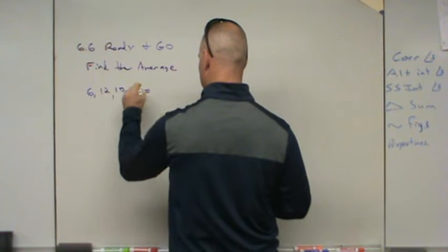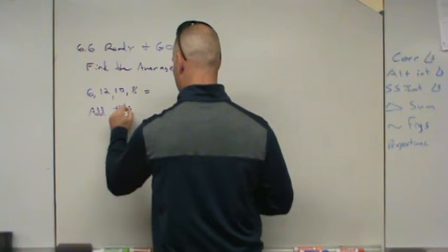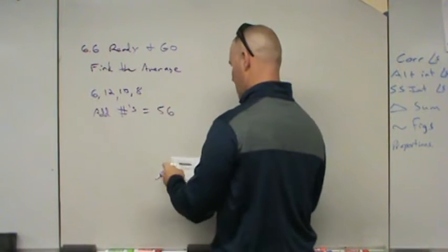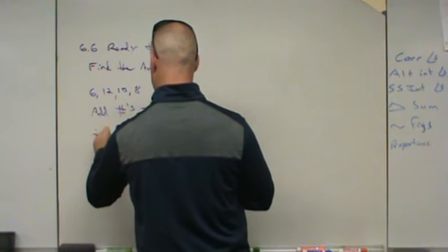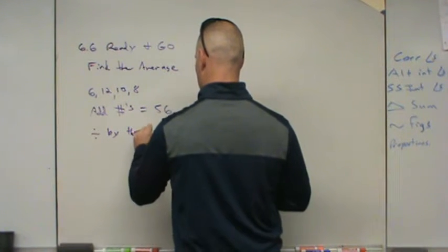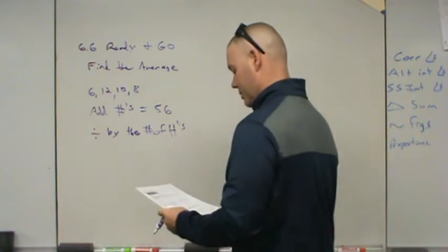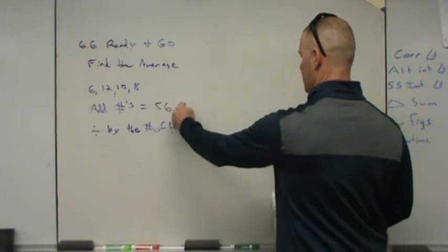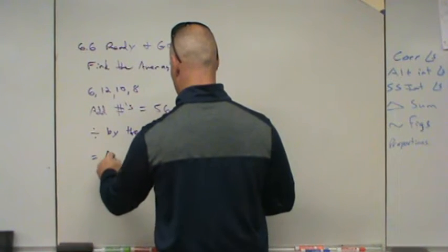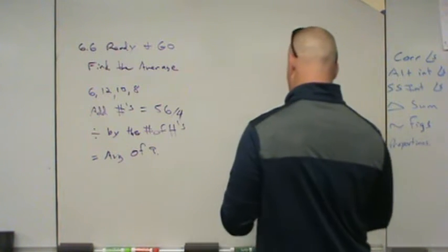We add them all together and get 36, then we divide by the number of numbers. In this case we have 4, so 36 divided by 4 gives you an average of 9.